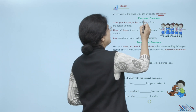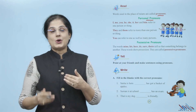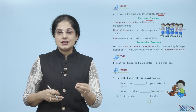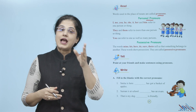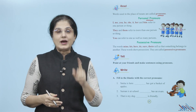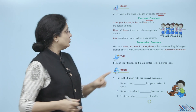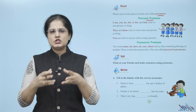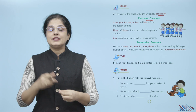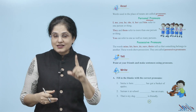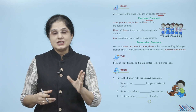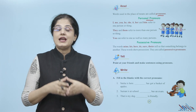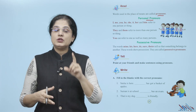Now first of all let us look at the personal pronouns. I, me, you, he, she, it, her, and him refer to one person or thing. Yeh waale jo pronouns hain — I, me, you, he, she, it, her, him — yeh kisi ek insaan ya ek cheez ko dikhane waale pronouns hain.